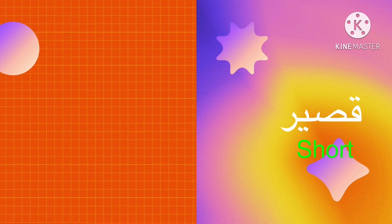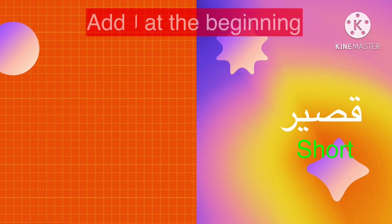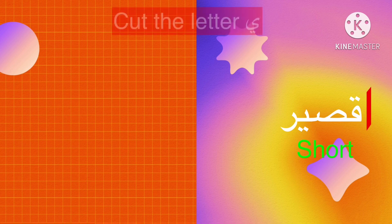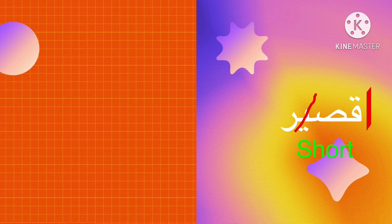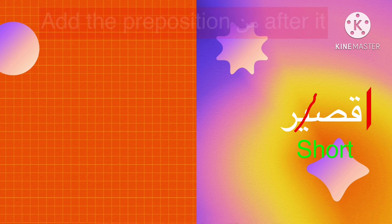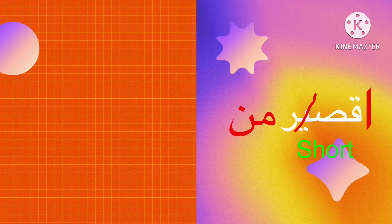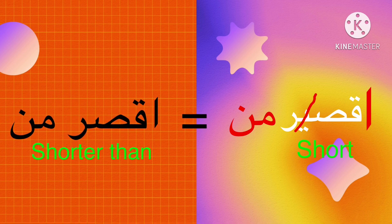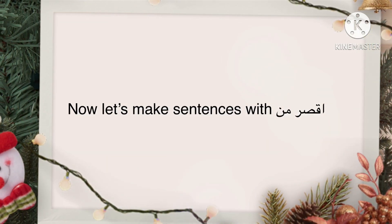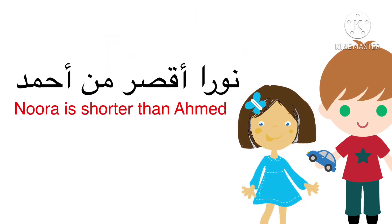Now we have a second word, 'kasir', which means short. Step one: add alif at the beginning — it turns to 'akibar'. Step two: cut the letter ya — we get 'akibar'. Step three: add the preposition 'min' — it turns to 'akibar min', which means shorter than.